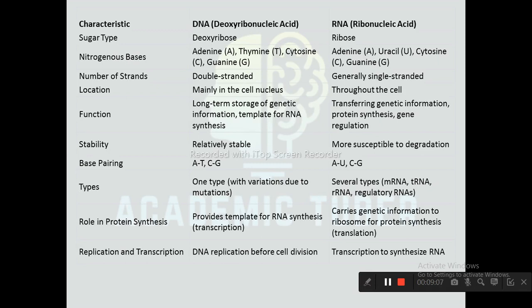Comparing DNA and RNA: on the basis of sugar type, DNA contains deoxyribose whereas RNA contains ribose. DNA contains nitrogenous bases adenine, thymine, cytosine, and guanine, whereas RNA contains adenine, uracil, cytosine, and guanine. DNA is double-stranded whereas RNA is single-stranded.